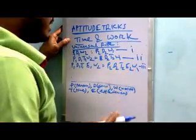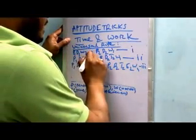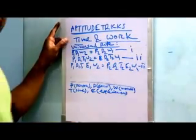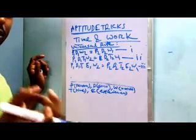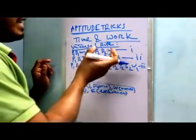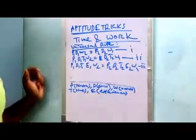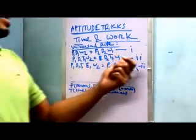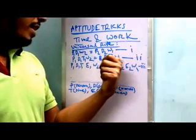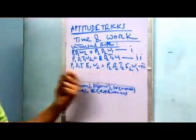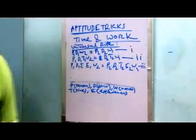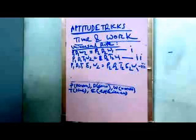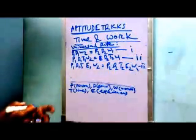The logic is similar in all cases, except for which particular constraints are involved in each equation. In equation 1, there is no time and no efficiency constraint. In equation 2, there is no efficiency constraint. In equation 3, every constraint is added. Now we will move to another rule.